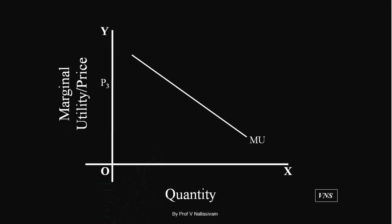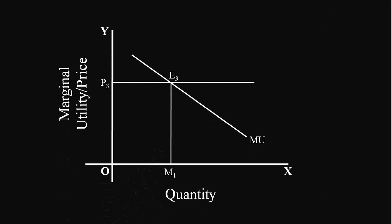To begin with, let the price be P3. The consumer is in equilibrium at E3 — he equates price with marginal utility and consumes M1 quantity of the commodity. P3 is on the marginal utility curve and at the same time it is on the demand curve. It means at P3 price, the consumer is willing to buy M1 quantity.